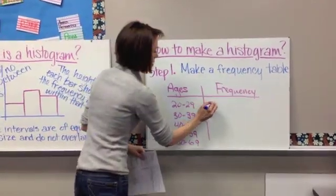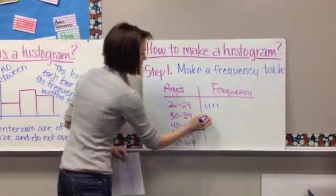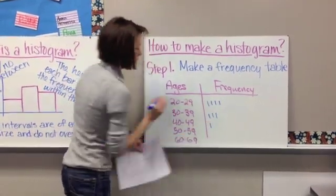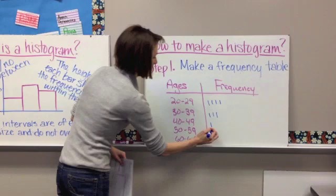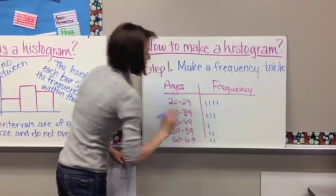From 30 to 39, you get 3, from 40 to 49, you should get 1, and 50 to 59, 2, and 60 to 69 is 2.